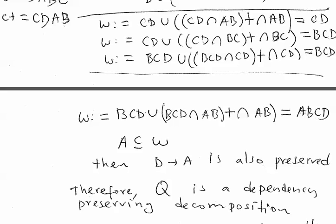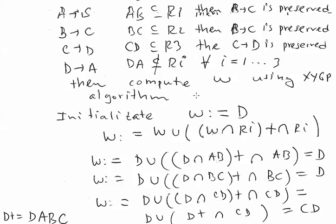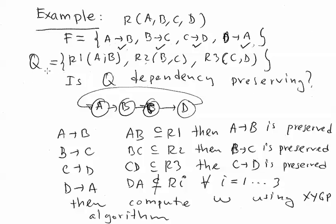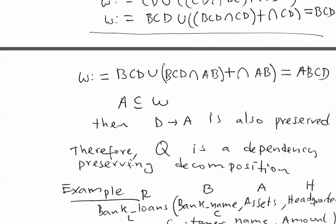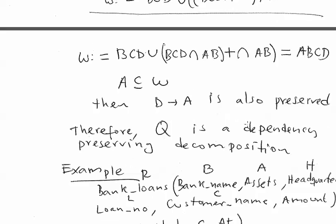Since A is a subset of W, we say that D→A is also preserved. To illustrate the alternative: if instead we finished an iteration with W unchanged and A was not a subset of W, then D implies A would not be preserved, and if one dependency is not preserved, the decomposition is not dependency preserving. But that's not the case here — A was a subset of W. Therefore D→A is preserved, and the final conclusion is that Q is a dependency preserving decomposition.